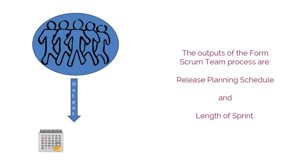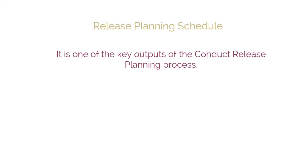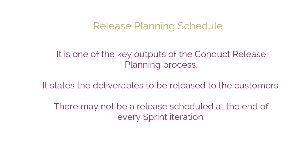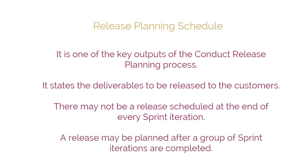The outputs of the Form Scrum Team process are Release Planning Schedule and Length of Sprint. A Release Planning Schedule is one of the key outputs of the Conduct Release Planning Process. It states which deliverables are to be released to the customers, along with planned intervals and dates for release. There may not be a release scheduled at the end of every sprint iteration — at times, a release may be planned after a group of sprint iterations are completed.